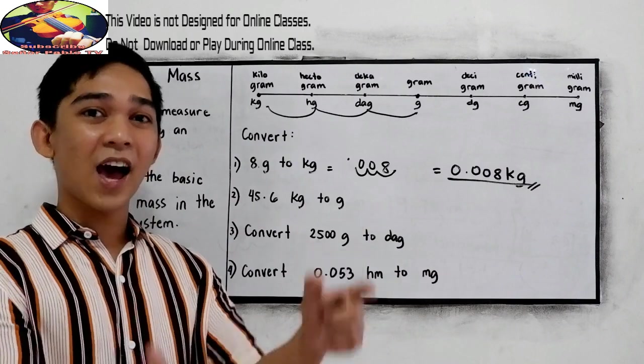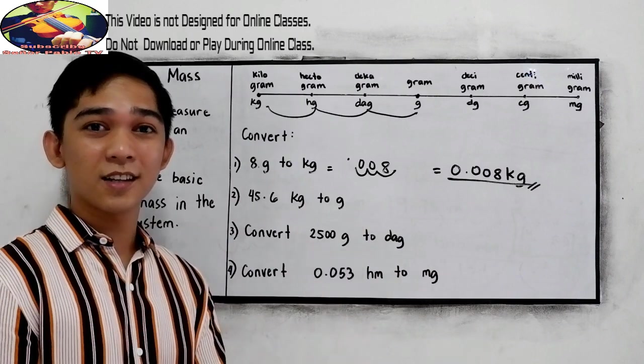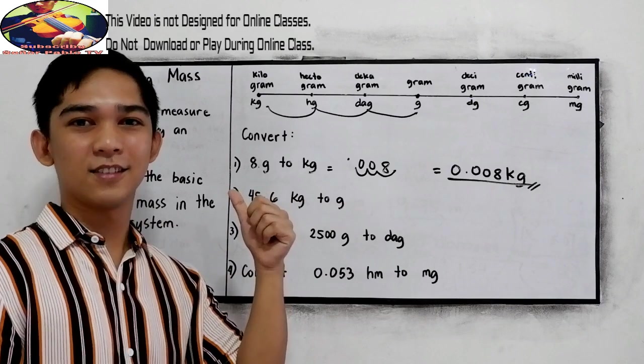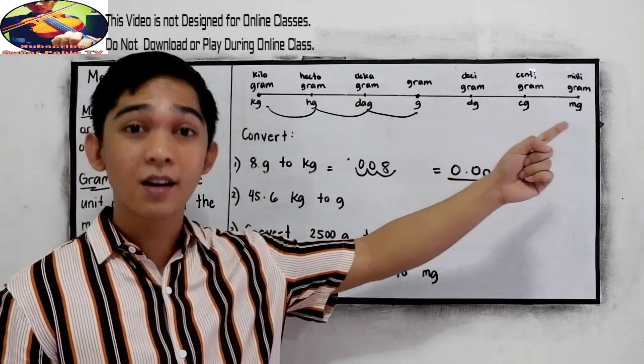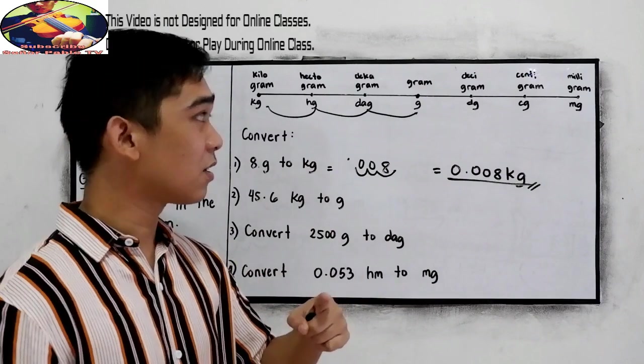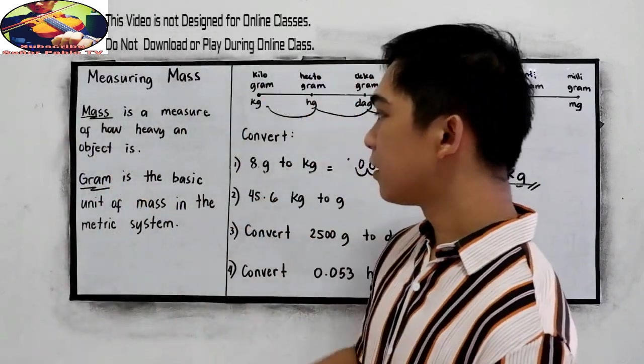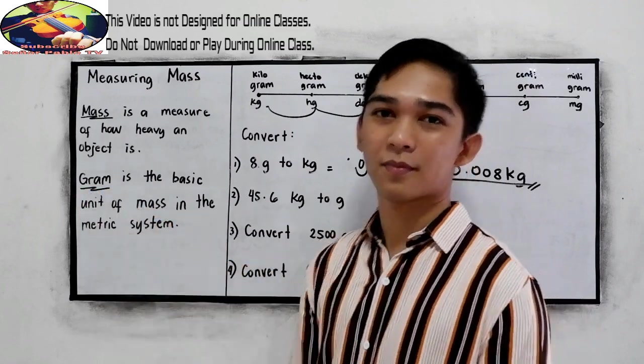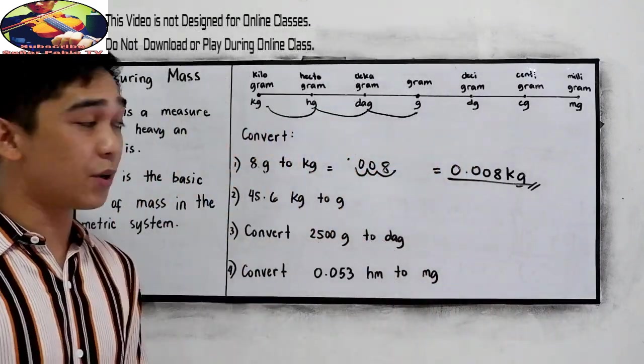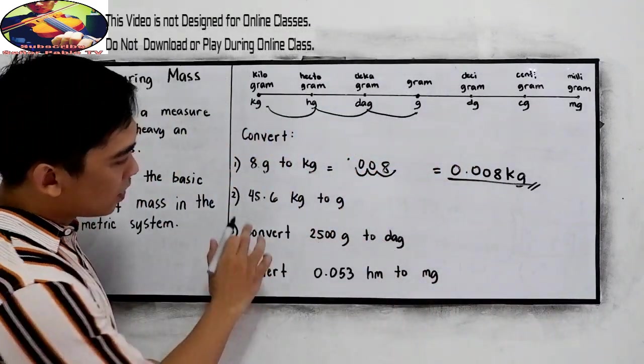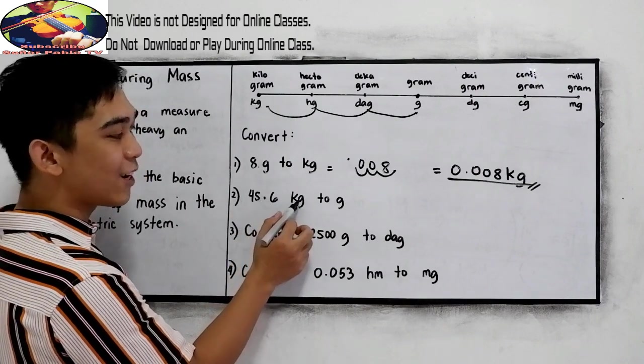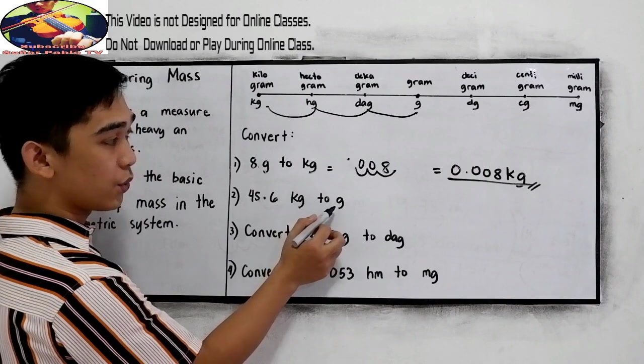It's just like converting our last lesson measuring length. We're going to use the same table, but in this case our basic unit is the gram. Now let us try number two: 45.6 kilograms to grams.